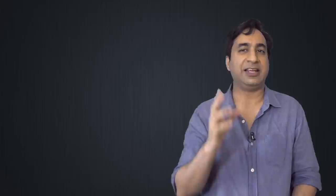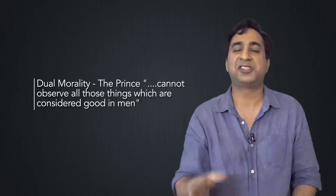The prince cannot observe all those things which are considered good in men, wrote Machiavelli. The prince has to do things in order to safeguard the lives and properties of people that ordinary people don't have to do. So in a very famous passage, Machiavelli writes—I'm paraphrasing here—it is of course always better to be loved and feared, but if one has to choose between being loved and being feared, it is better to be feared than to be loved.